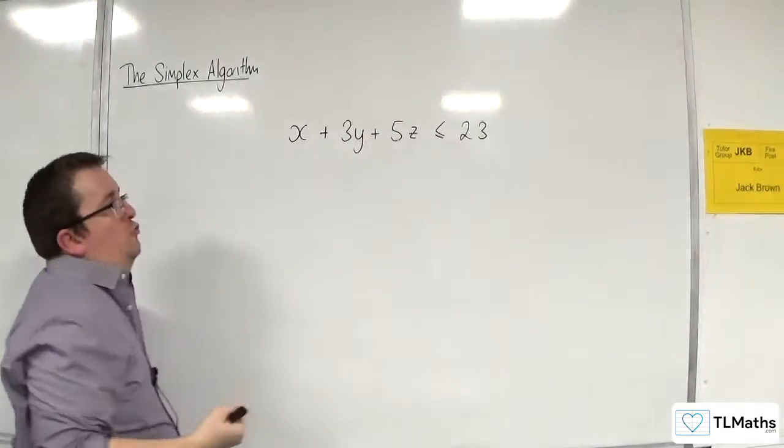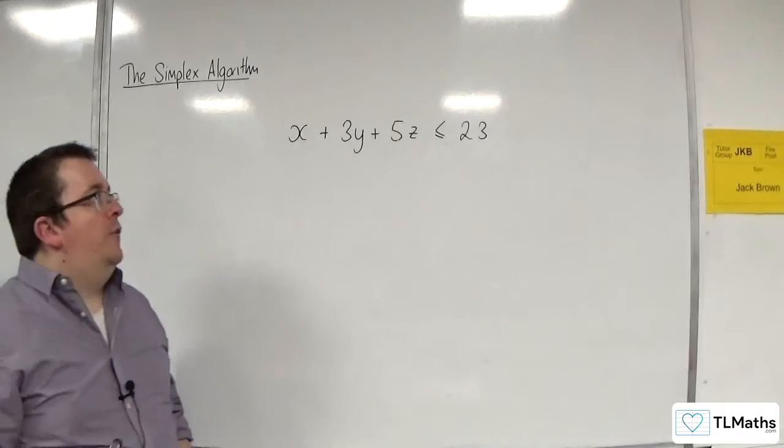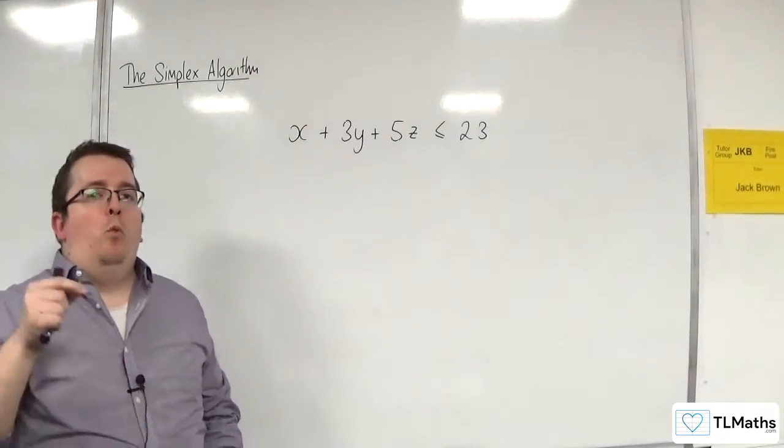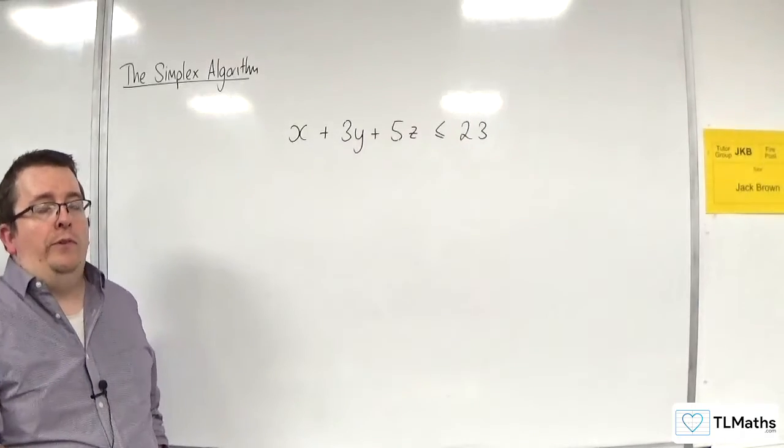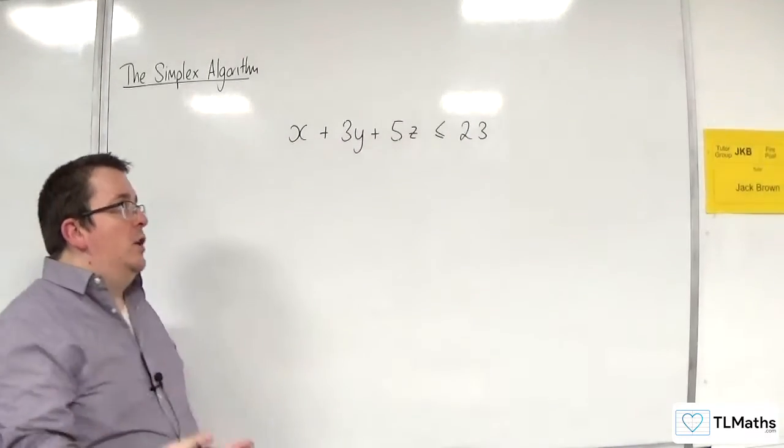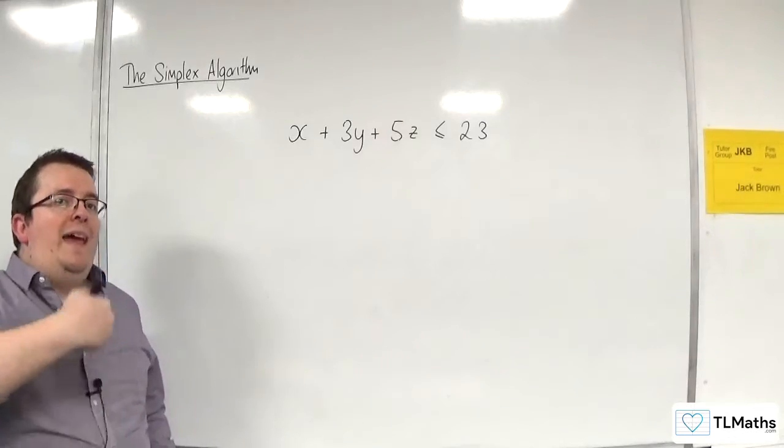So this is a three-variable constraint: x plus 3y plus 5z is less than or equal to 23. The simplex algorithm works with equations, not inequalities. So we need to turn this inequality into an equality.